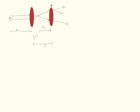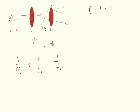We have 1/P2 + 1/Q2 = 1/F2. Now F1 and F2 are the same — the focal length of both lenses is 14.9. The problem doesn't specifically tell us what P2 is, but gives us enough to find it. We can define P2 based on D and Q1, because P2 equals D minus Q1.